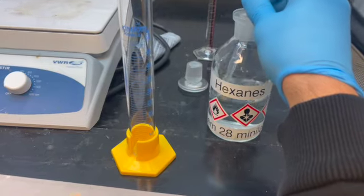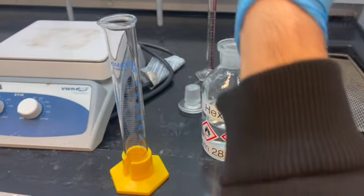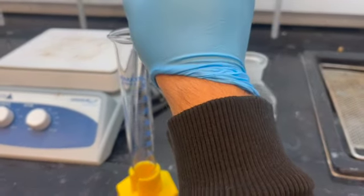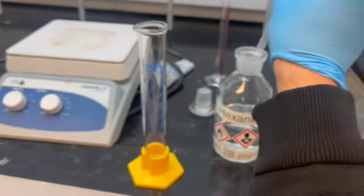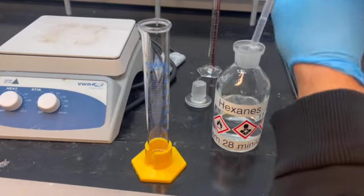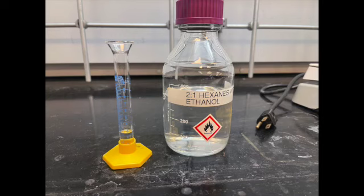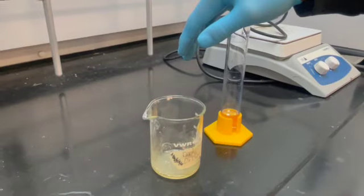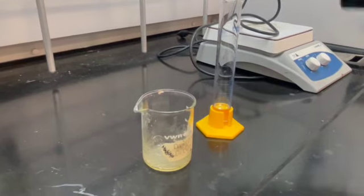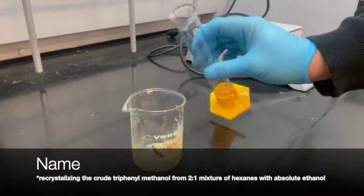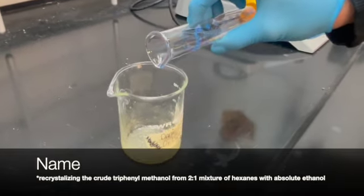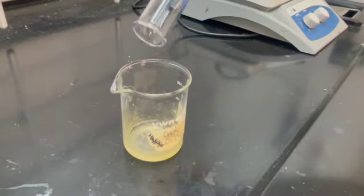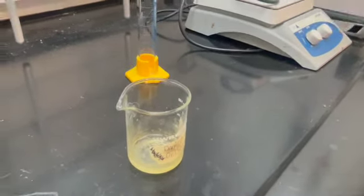We'll be using 10 milliliters of hexanes. We'll measure 10 milliliters. Now we're going to grab the hexanes that we measured, dump it inside our solution, and mix it.